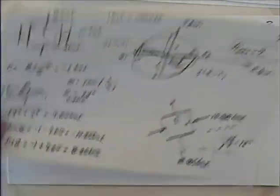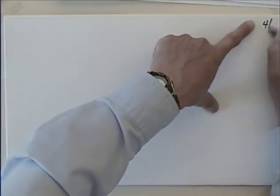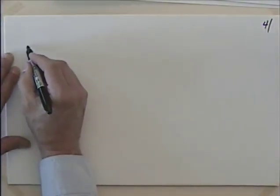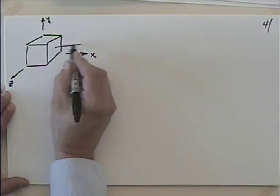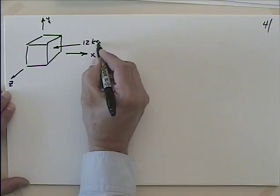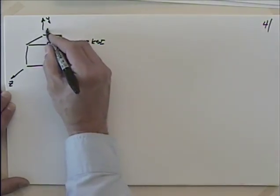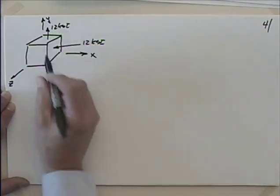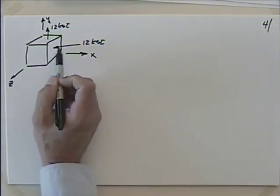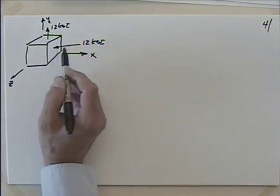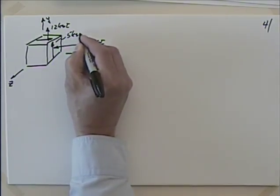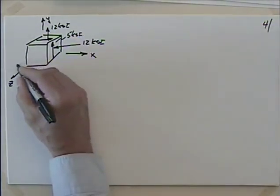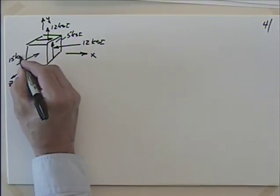I want to try one more problem. I don't think I'll get through it today, but it'll be a good introduction — it's a little different. I'm going to take this into three dimensions. This is the z-direction, this is y, this is x. We have 12 KSI, 12 KSI, and shear stresses of 5 KSI. In the z-direction, I'm going to put 15 KSI.